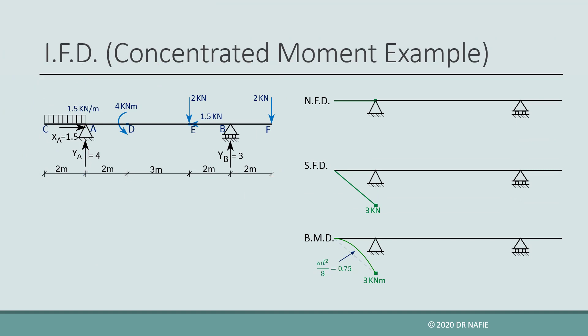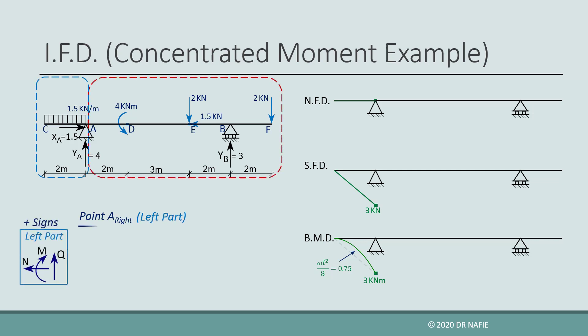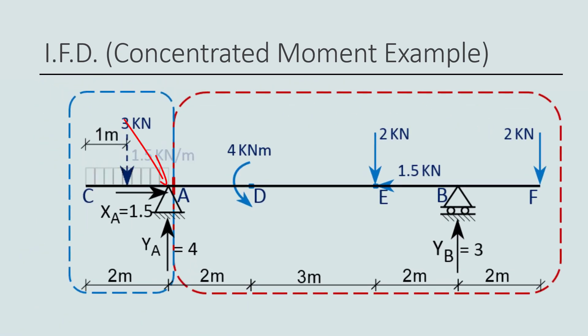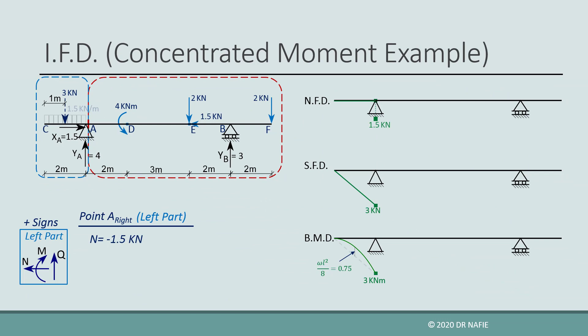We then evaluate the internal forces at the point just to the right of point A, again using the left part. Because the cut is now at the right of point A, point A is in the left part, and both XA and YA belong to the left part. The normal force is negative 1.5 kN. The shear force is the sum of the negative 3 kN equivalent force and positive YA, giving positive 1 kN. The bending moment has the same value as before, since XA and YA pass through point A and cause no moment about A.